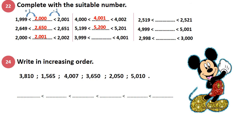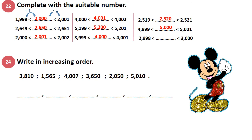3,999 — I add 1, replace with 0s. The number that comes after 3,999 is 4,000. 2,519 — I add 1 to 19, it will be 20. So 2,520. 4,999 — I have 3 nines, replace with 3 zeros, and the number after 4 is 5. So 5,000. 2,998 — what is the number that comes after 8? 9. So 2,999.